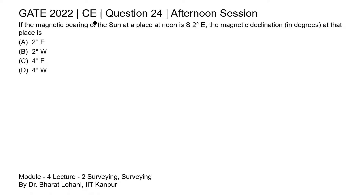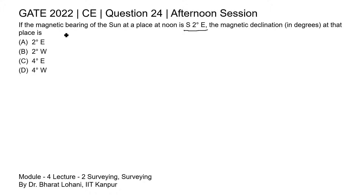This is question 24 of the civil engineering paper of GATE 2022 afternoon session. If the magnetic bearing of the Sun at a place at noon is South 2 degree East, the magnetic declination at that place is? In this question, the magnetic bearing of the Sun at noon is given as South 2 degree East, and we need to compute the magnetic declination at that place. This question is from the topic of bearing of a line.